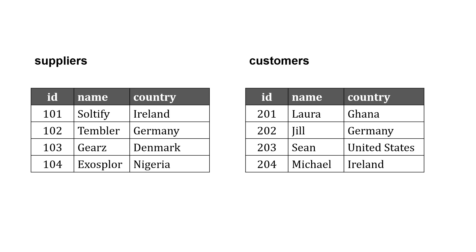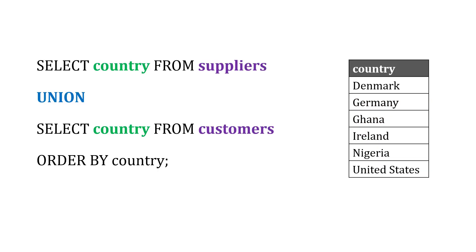Here's an example. Let's say we have a suppliers table and a customers table, and in each of those there's a field with a country listed in it. Maybe we want to combine those countries and have a consolidated list. So we could say SELECT country FROM suppliers, UNION, SELECT country FROM customers, and then maybe ORDER BY country so it's alphabetical.